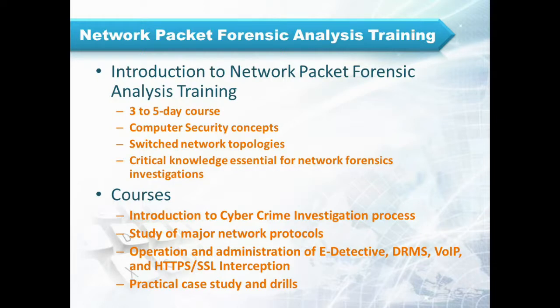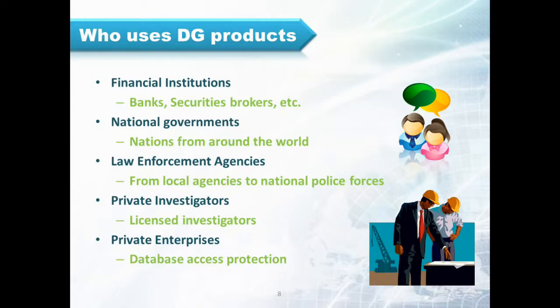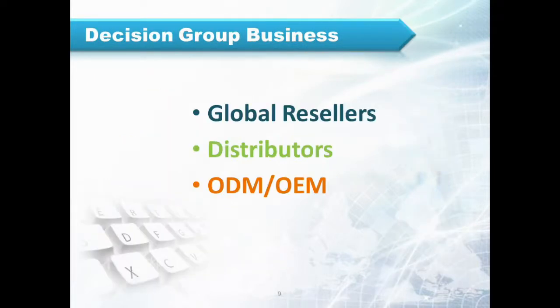Decision Group products are used by financial institutions like banks and security brokers, nations from all over the world, small law enforcement agencies to large national police forces, licensed private investigators, and private enterprises to protect sensitive information present on their databases. Decision Group is a supplier of powerful cyber security solutions, and we are always interested in building global partnerships. These partnerships can be resellers and training partners, distributors, and ODM/OEM customers that are searching for the perfect solution to add value for their customers.